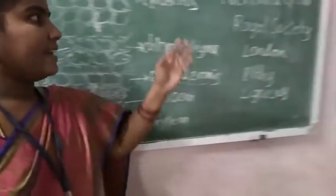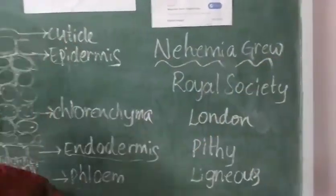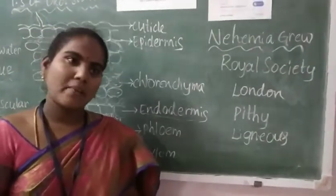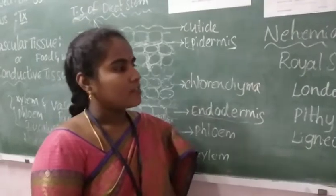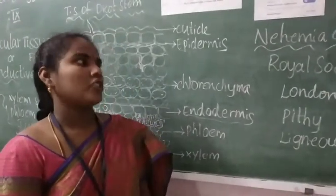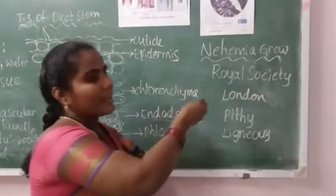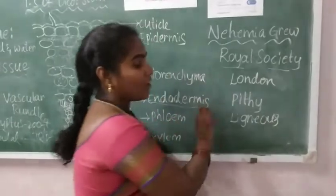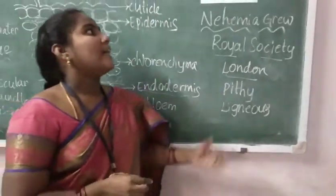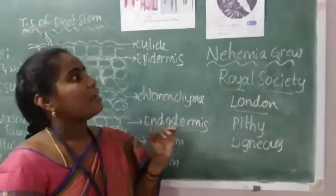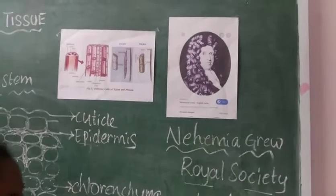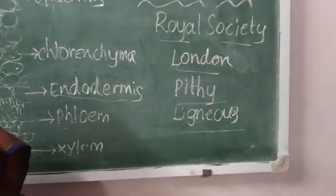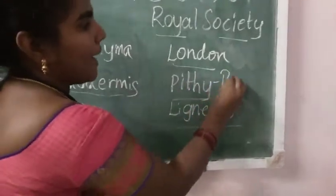The scientist Nehemiah Grew was one of the physicians who conducted research on the anatomy of the plant. Anatomy is the branch of science that deals with the internal structure of the plant. Nehemiah Grew worked at the Royal Society located in London. He stated that the fundamental part of the plant consists of two parts: the pithy part and the lignous part, and he gave the new term 'parenchyma' to the pithy part.